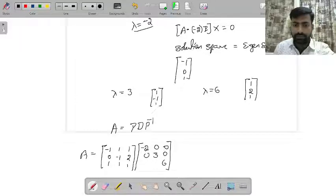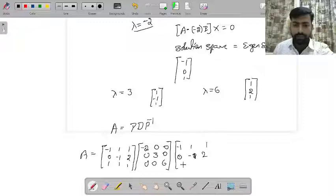So the rest of them are zeros. And here we need to write its inverse: negative 1, 1, 0, negative 1, 2, 1, 1, 1. And its inverse.